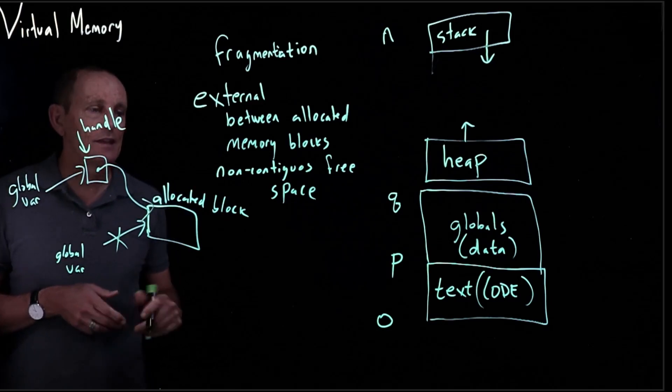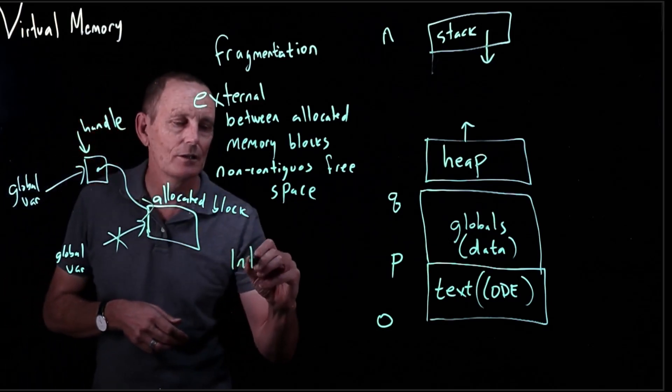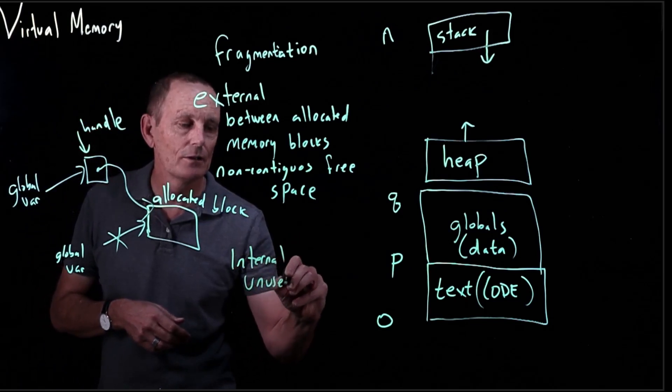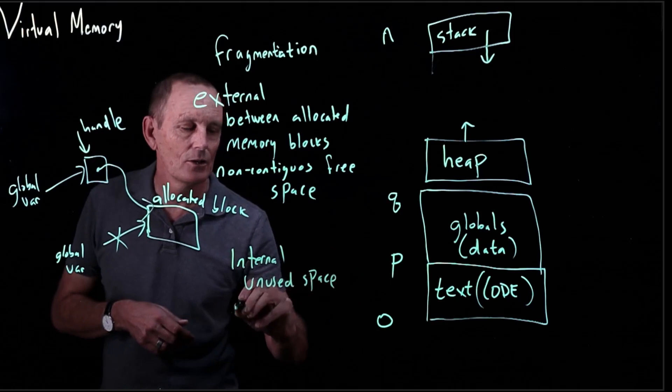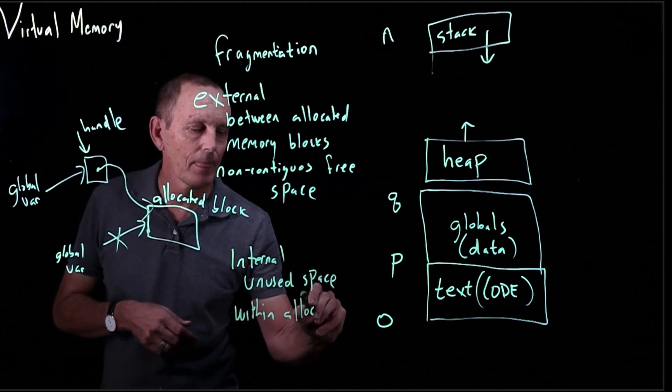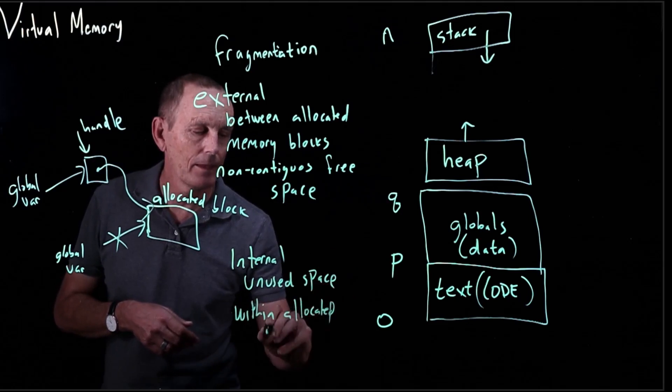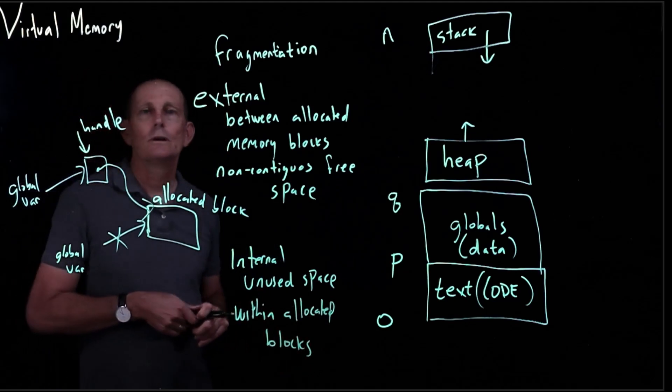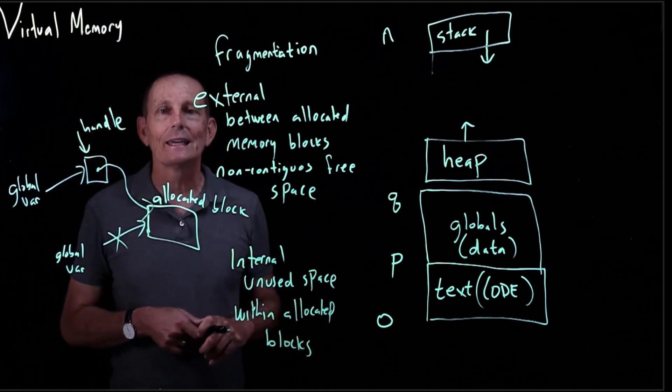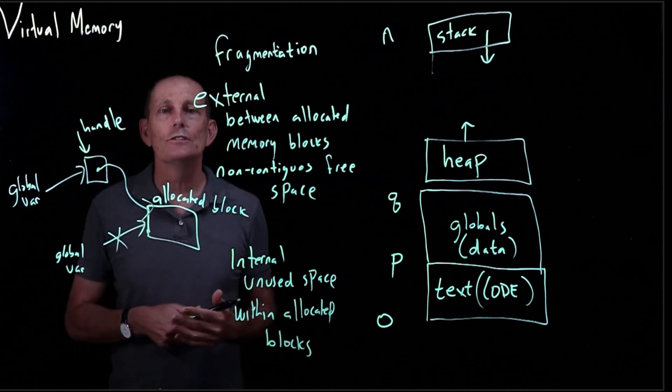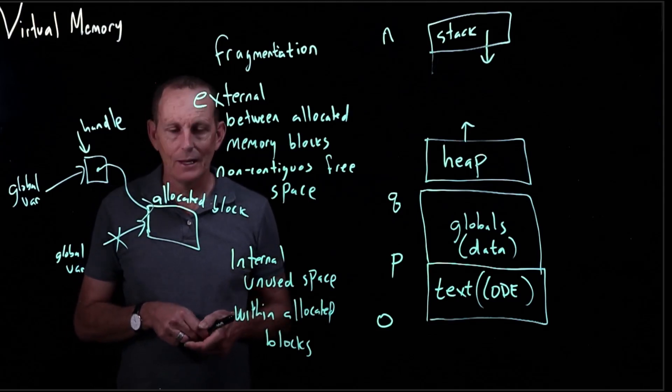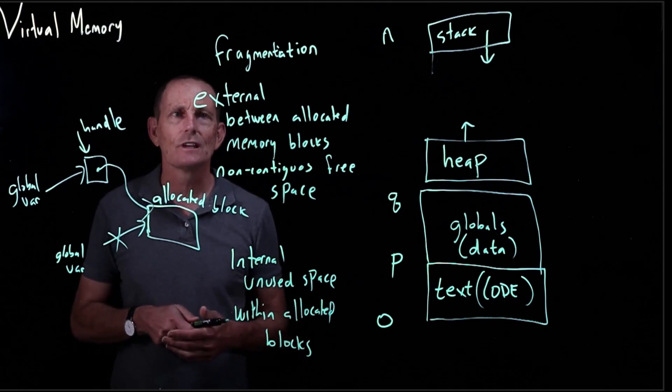Then the internal fragmentation is unused space within allocated blocks. So there, if you're basically over-allocating, creating a block larger than you need, then you're causing internal fragmentation. And a fix of that is just don't use fixed-sized blocks.